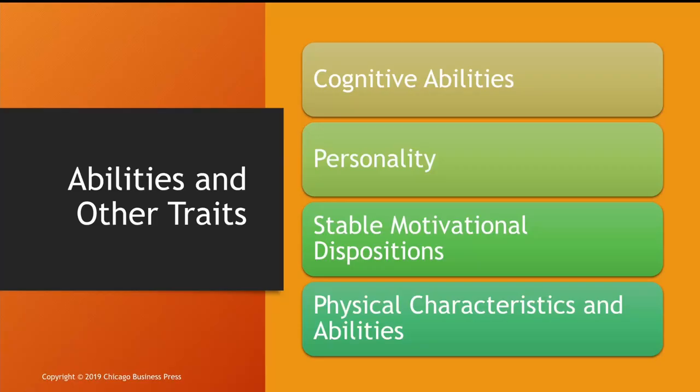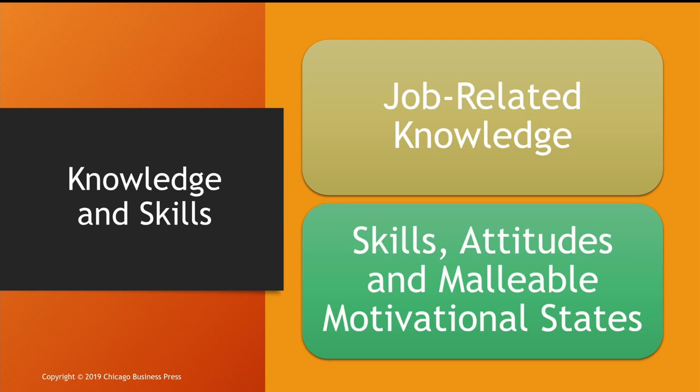Abilities and other traits include cognitive abilities, personality, stable motivational dispositions, and physical characteristics and abilities. These are very important, but we need to keep in mind that they are not the only factors determining performance. We also have knowledge and skills: job-related knowledge, skills, attitudes, and malleable motivational states.